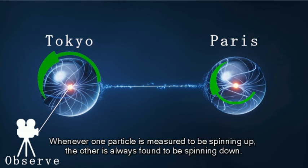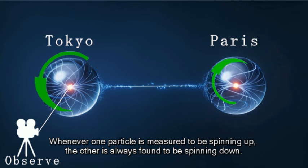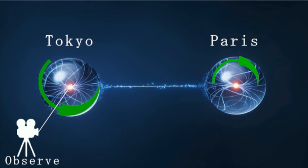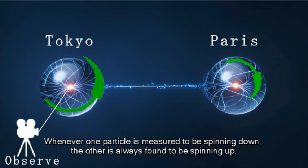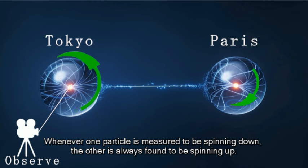Whenever one particle is measured to be spinning up, the other is always found to be spinning down. Whenever one particle is measured to be spinning down, the other is always found to be spinning up.